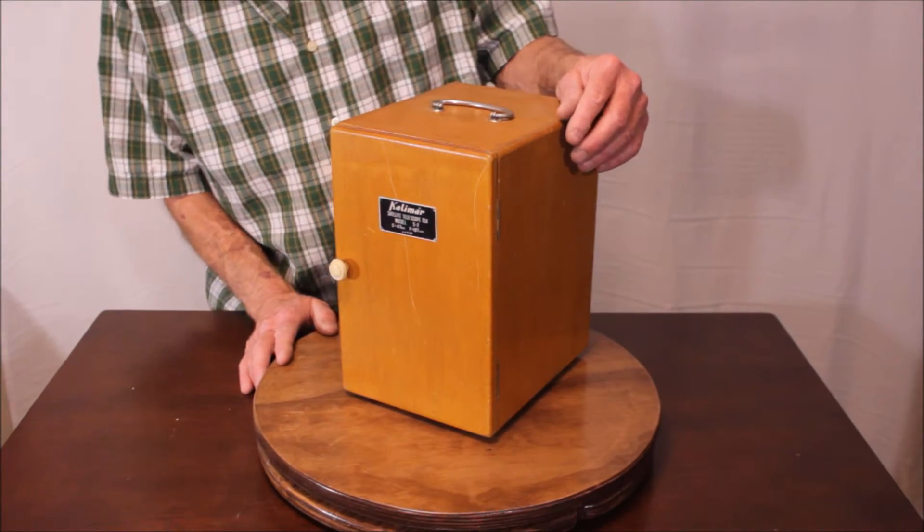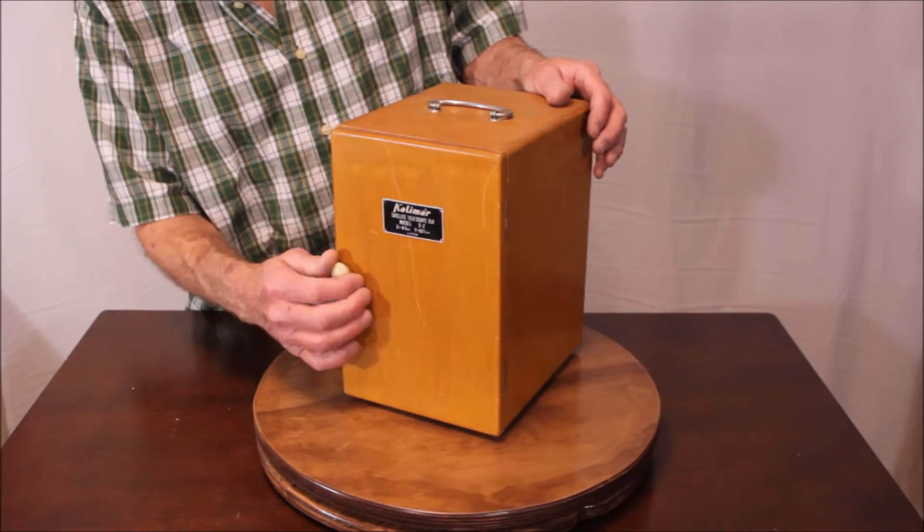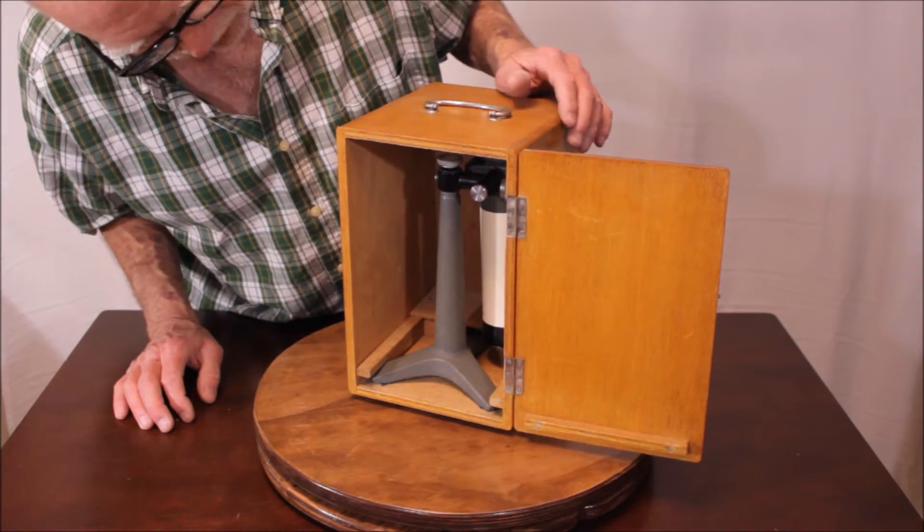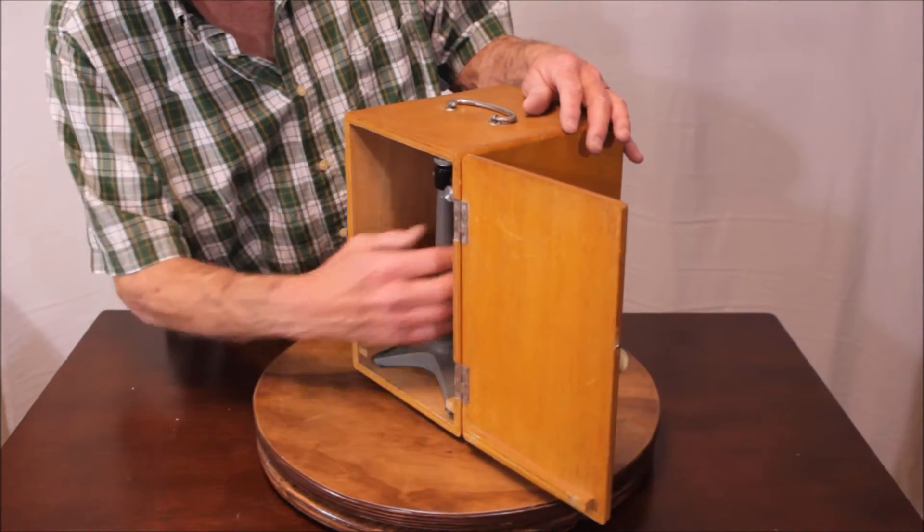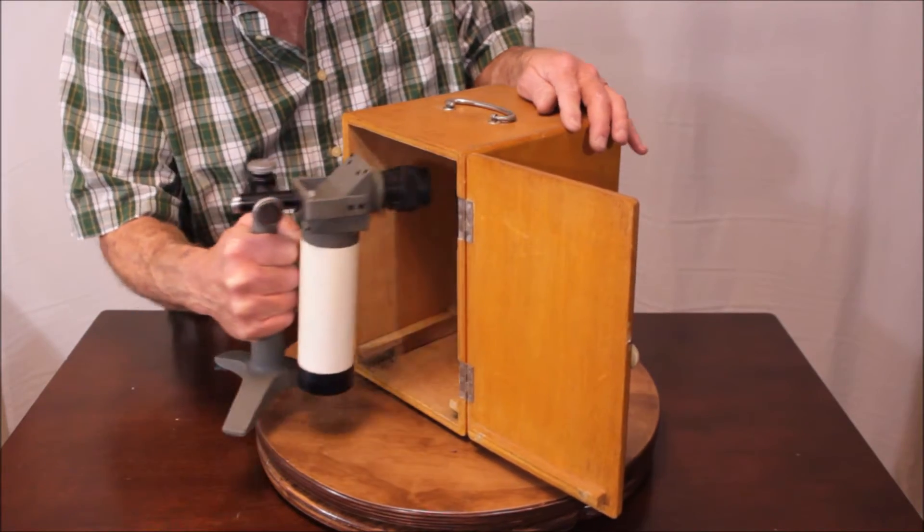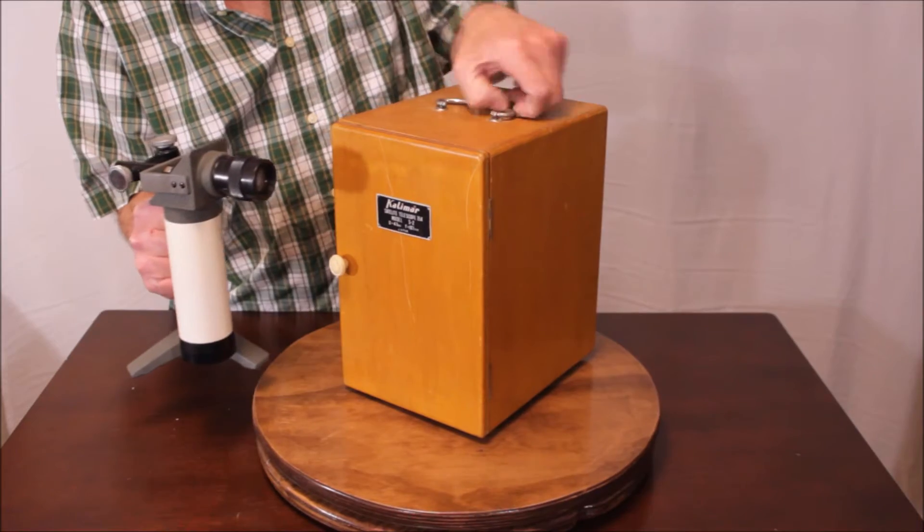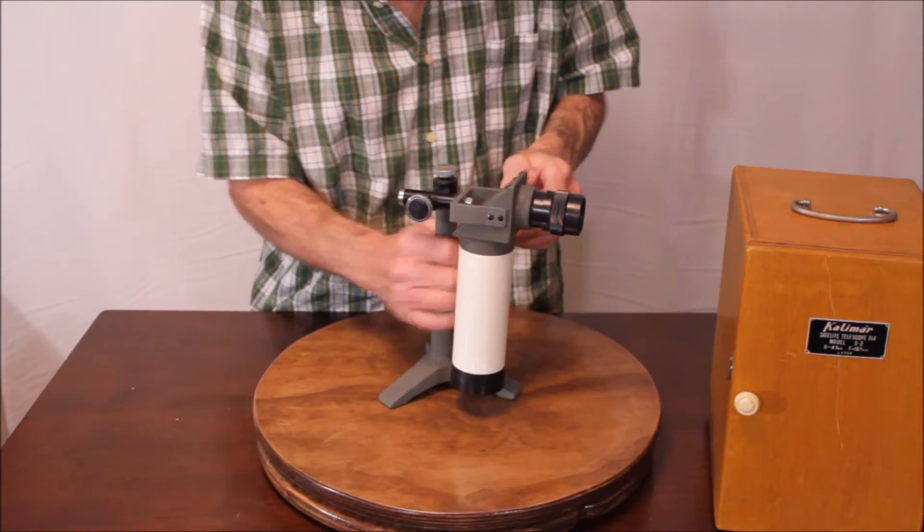This is the Calamar Model S2 and as you can see it comes in a very nice case, comparable to a nice microscope case. The configuration on this thing is quite unusual. First of all, the fact that it has a case is pretty bizarre and interesting.